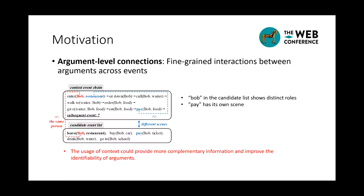The figure in this slide shows two examples of arguments connections in a restaurant visiting scenario. Bob in the candidate list shows distinct roles, such as Bob buying a car or Bob drinking water. By associating Bob with other arguments in the context event chain, we can reliably infer that the candidate event with Bob related to the restaurant is more likely to be correct.